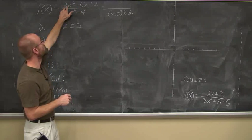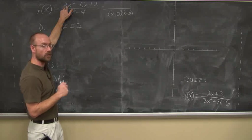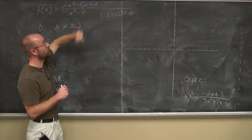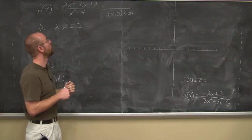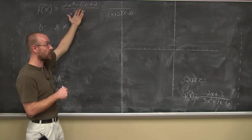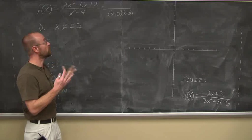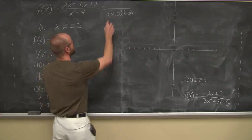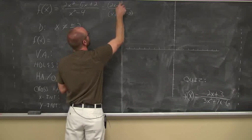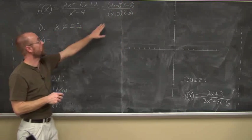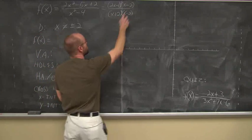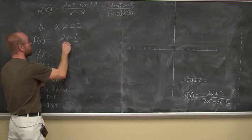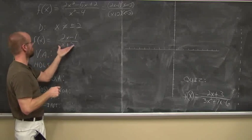To write it in lowest terms, I also have to factor the top. Using the AC method — A times C is 2 times 2 equals 4. The factors of 4 that sum to negative 5 are negative 4 and negative 1. I rewrite the middle term using those factors, then factor by grouping, and I get (2x - 1)(x - 2). Now I can see x minus 2 and x minus 2 are a common factor that reduces. So in lowest terms, the reduced rational function is (2x - 1) over (x + 2).